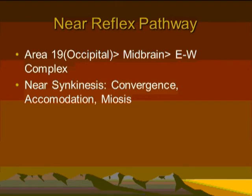The near reflex begins in the occipital region, area 19, goes to the midbrain, and then to the Edinger-Westphal complex. It will cause convergence, accommodation, and miosis.